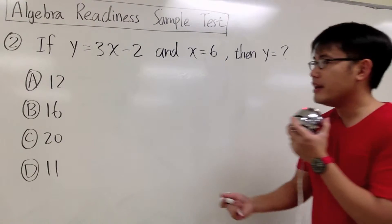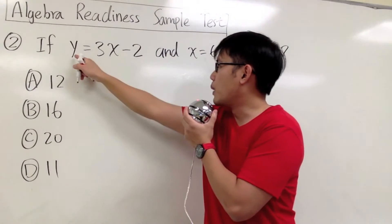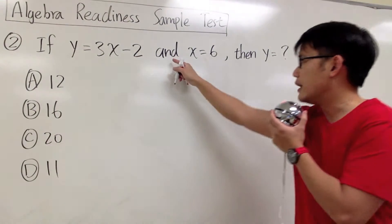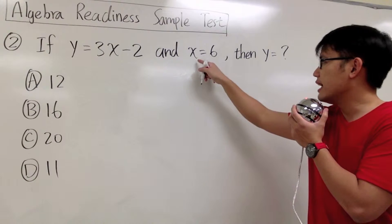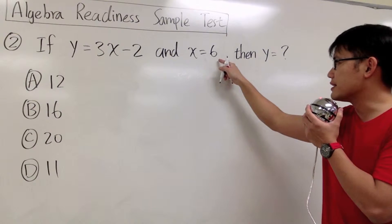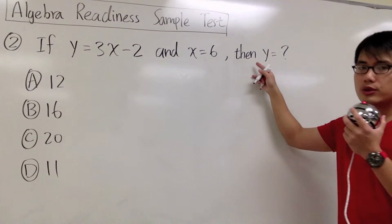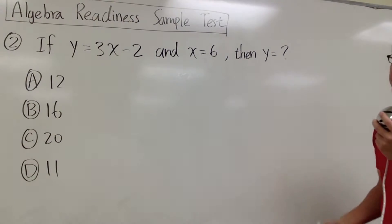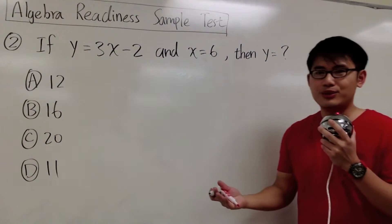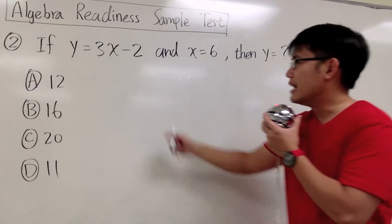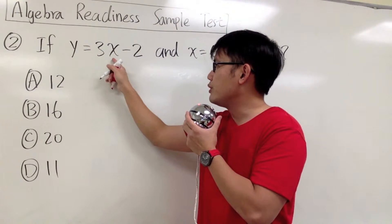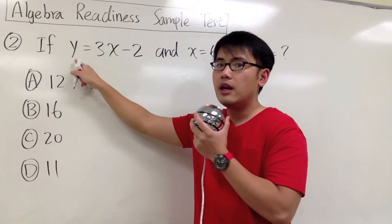For number 2, we have y is equal to 3x minus 2, and we also know that x is equal to 6. Our goal is to find out the value for y. As we can see, we have the connection between x and y.